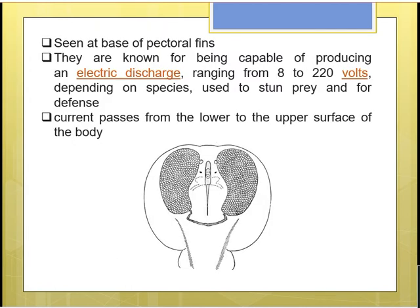Now coming to the most important feature of this fish — the electric organs. The electric organs are located at the base of the pectoral fins and are capable of producing electric discharge ranging from 8 to 220 volts, depending upon the species. This electric discharge is used for stunning prey as well as for defending against predators such as larger fishes and sharks. It is used for both offense and defense.